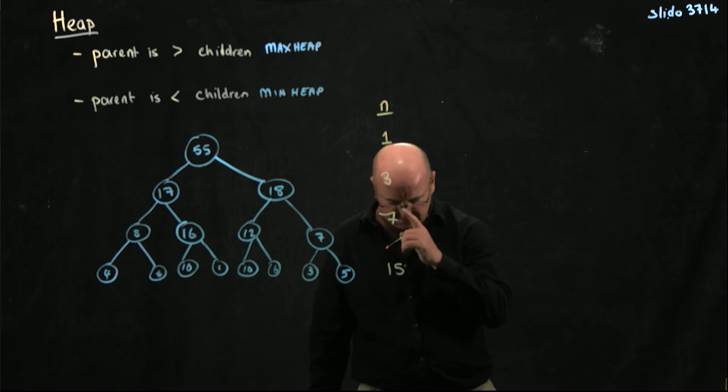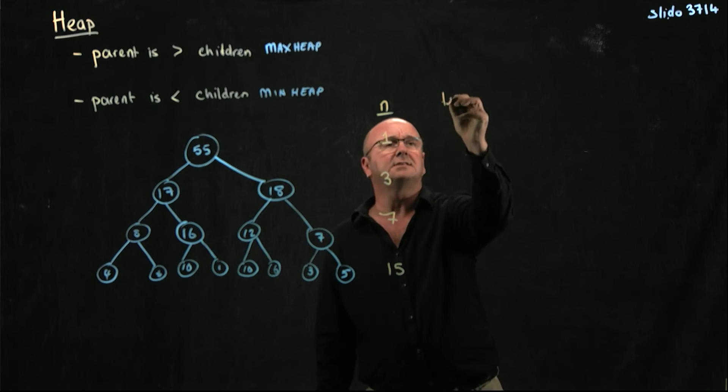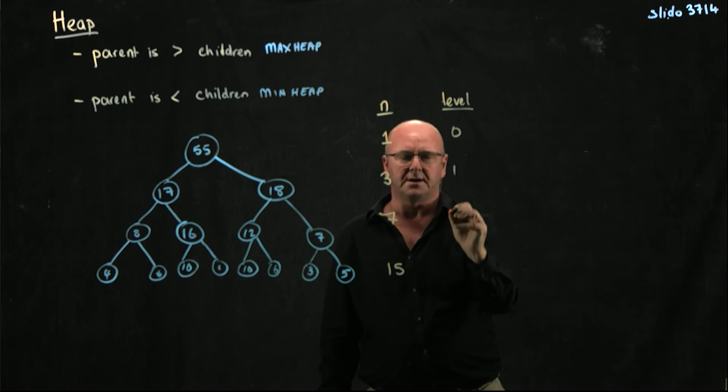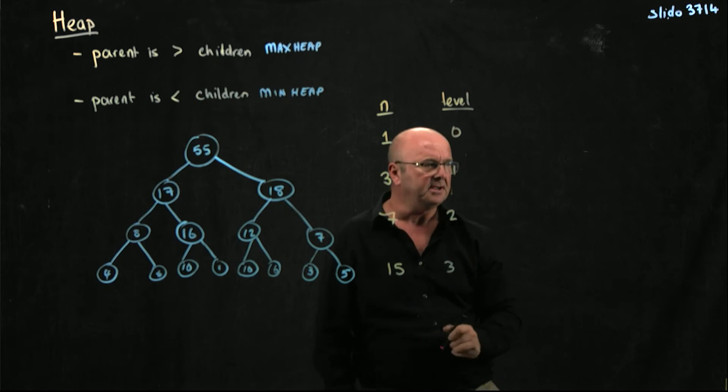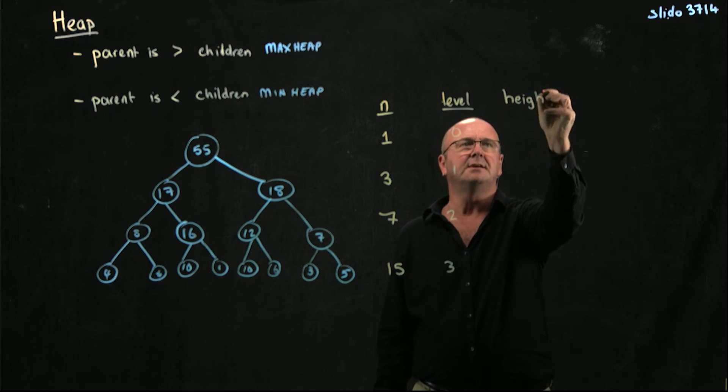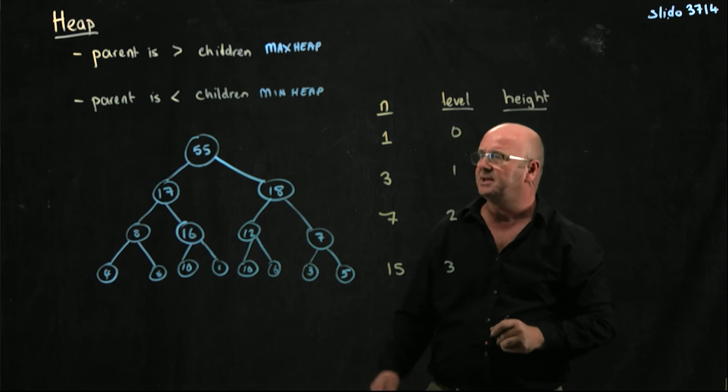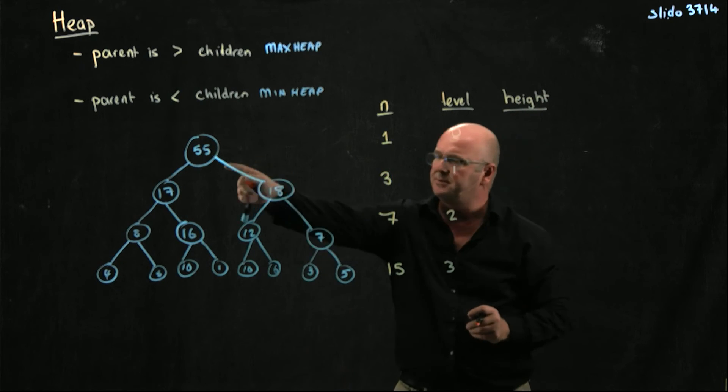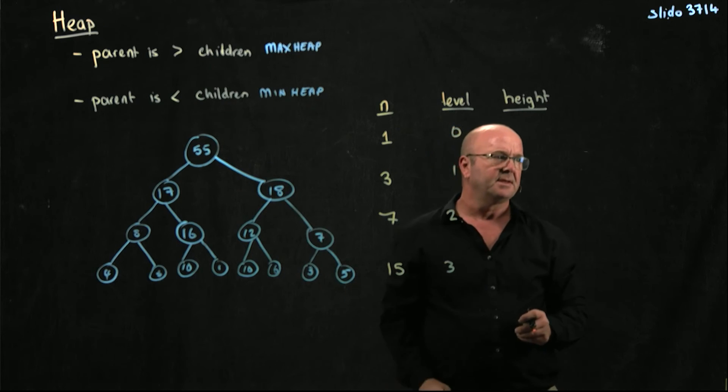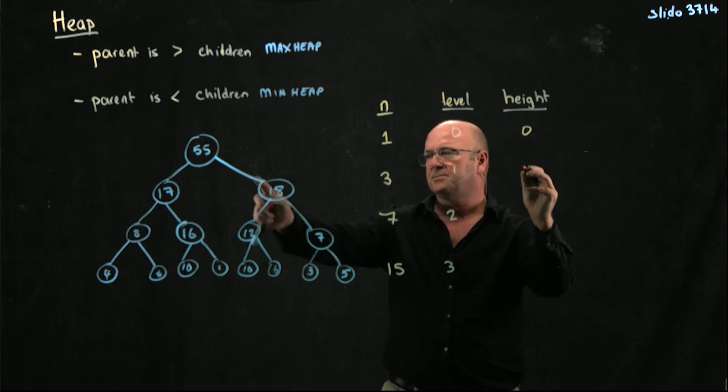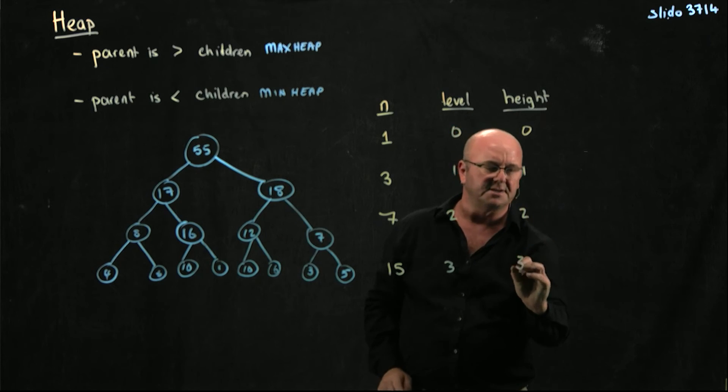So this is n, and this is, for example, the level 0, 1, 2, 3. Or we can talk about the height of the tree, and the height of the tree is the number of edges on the longest path from the root to the leaf. So the height of the tree here is 0, the height of the tree is 1, the height of the tree is 2, the height of the tree is 3.